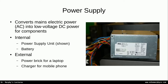This power supply can be located internally — mounted inside the case, with wires coming out of it that plug into various different components inside the computer. On the back is a location where we plug in a power cord that goes to the mains electric supply. That cord plugs into the back of the power supply, and then the power supply produces the appropriate DC voltage for the system.